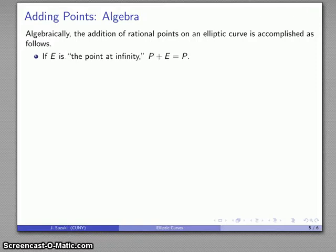First off, if I'm trying to add the point at infinity, what I find is that adding the point at infinity to any rational point just gives you the point itself. In other words, this point at infinity serves the same purpose as the additive identity 0 does in the addition of the integers. And again you might draw a few diagrams to convince yourself this must in fact be the case.